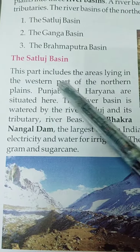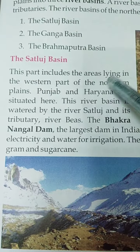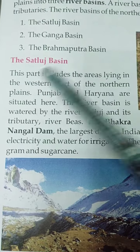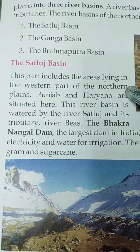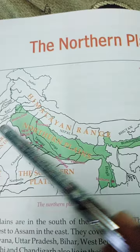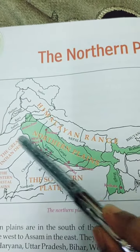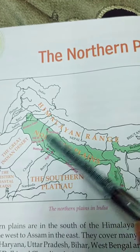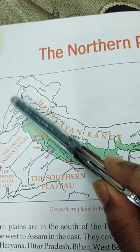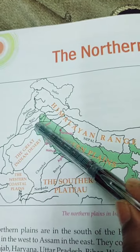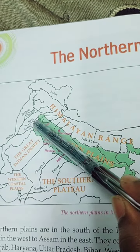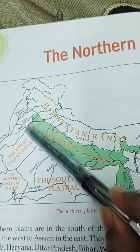Today we will study about the Satluj Basin. We already studied water river basins. A river basin is an area watered by a river and its tributaries. So this area watered by a river or its tributaries is called the river basin.